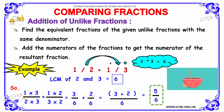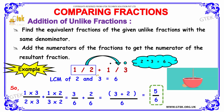By multiplying the denominator 2 by 3, we get the LCM value of 6. We must multiply the numerator by the same value. So 1 divided by 2 is multiplied by 3 in both numerator and denominator. The reason for multiplying by 3 is that 2 into 3 yields 6, making the denominator equal to the LCM.